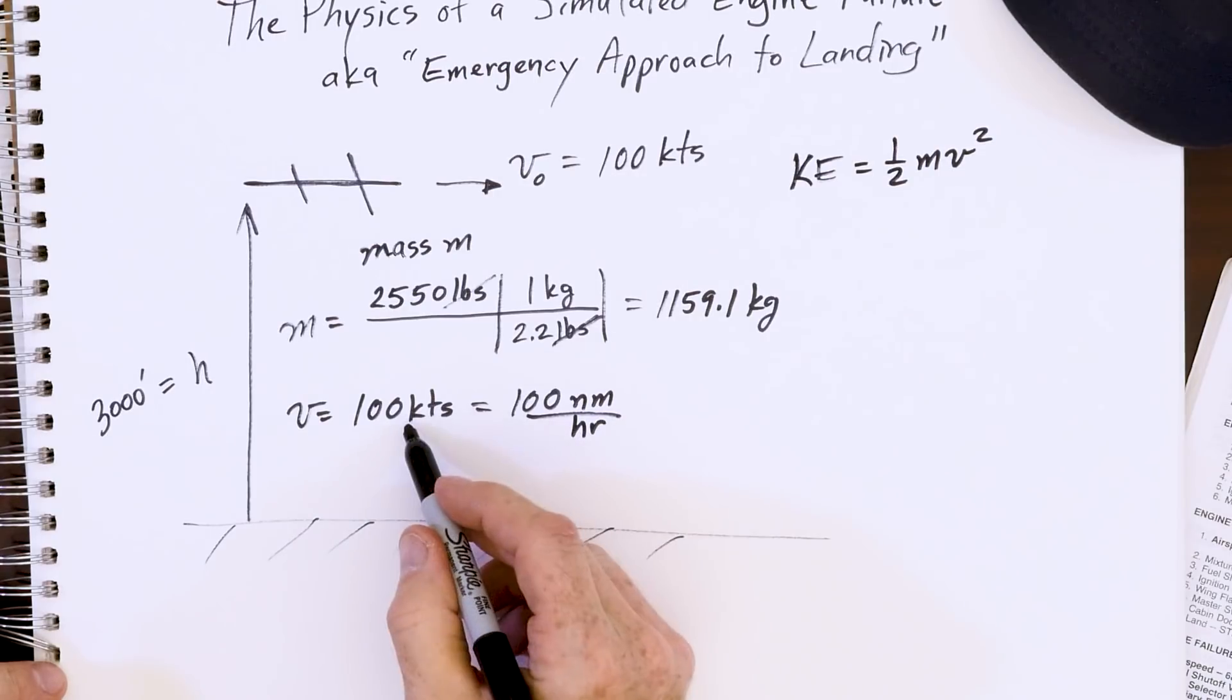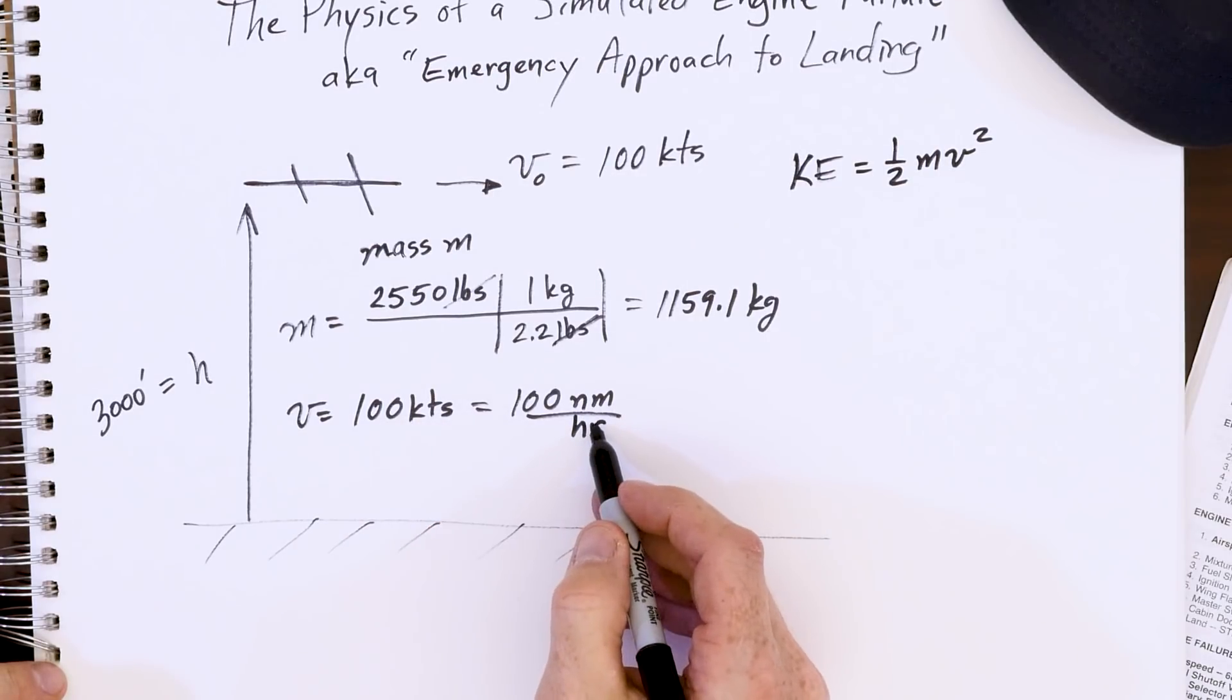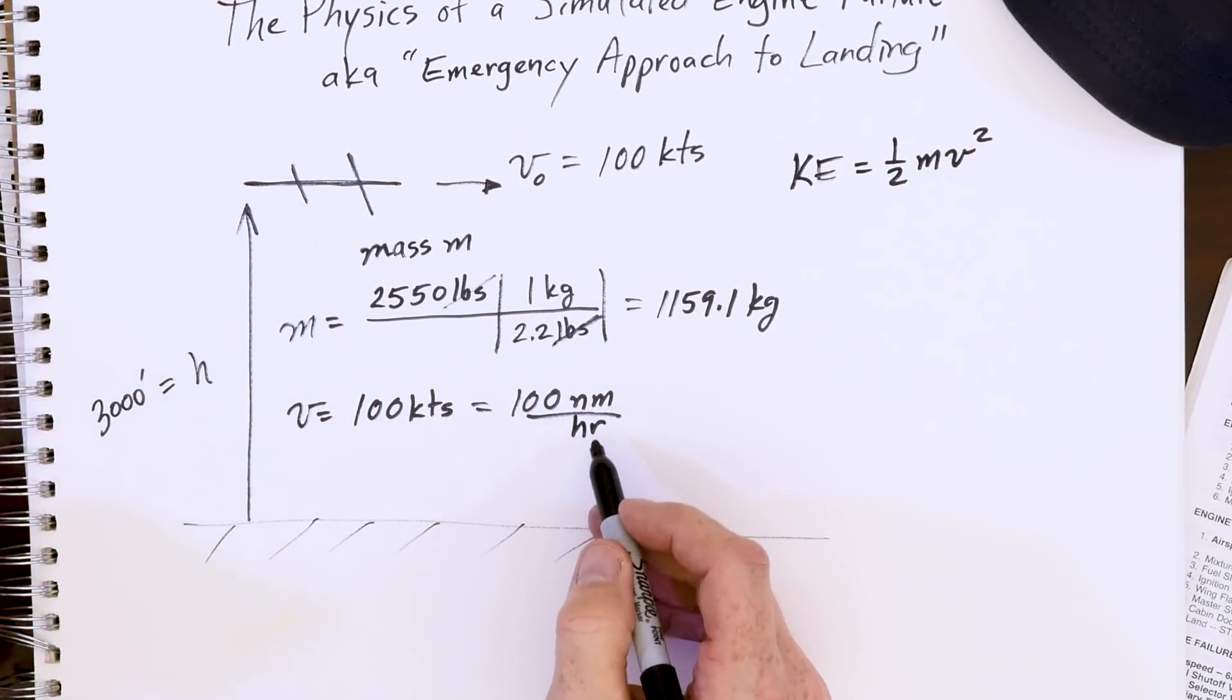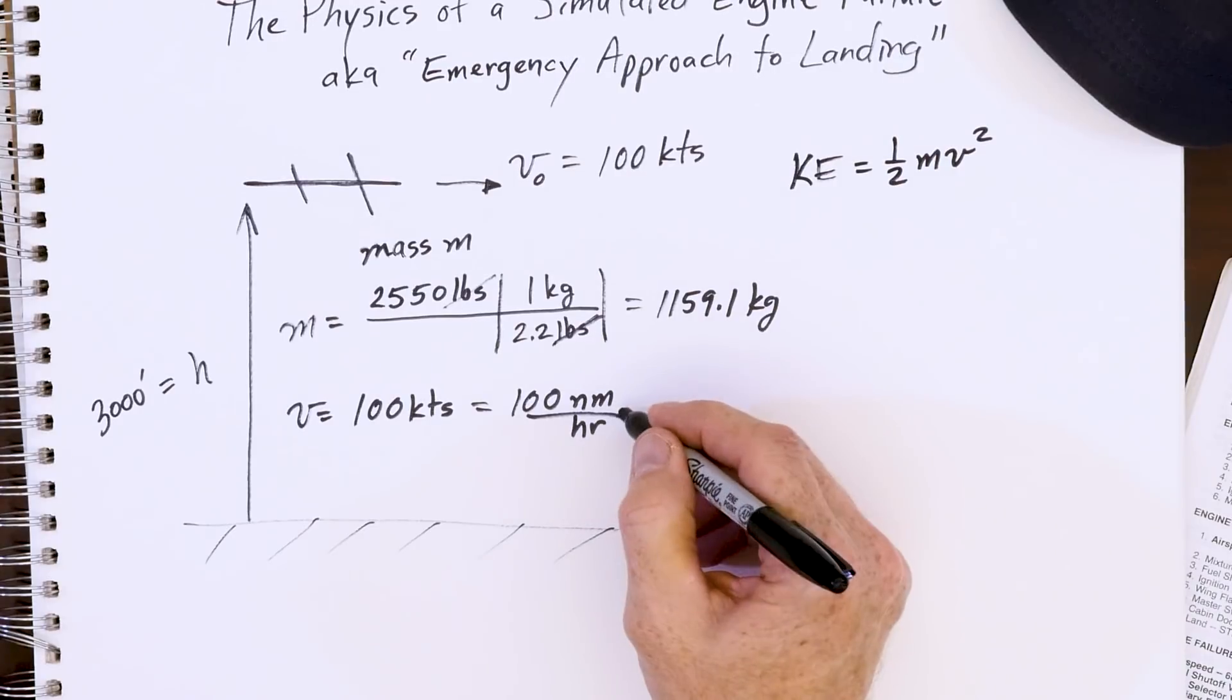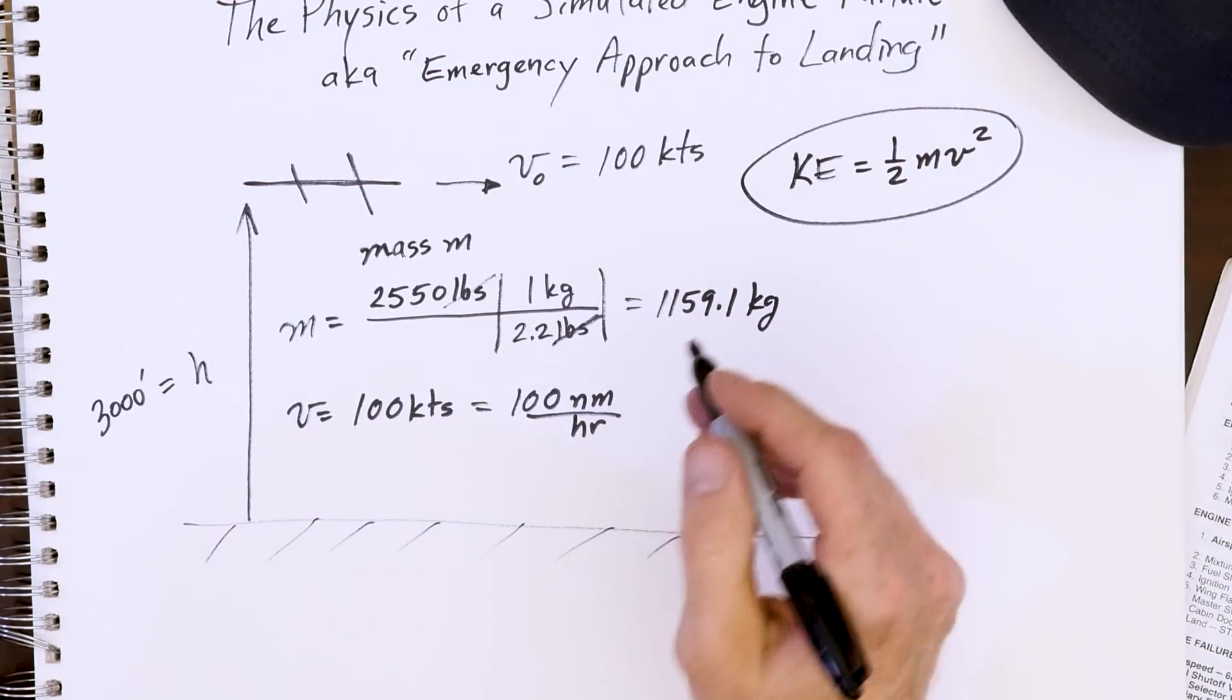For us this means 100 nautical miles per hour. So remind yourself that knots means nautical miles per hour just like feet per second or meters per second, it's got to be some distance per time. So we want to convert this now into the units for physics class and make this into meters per second. Remember our goal here is to get the total kinetic energy for step one.